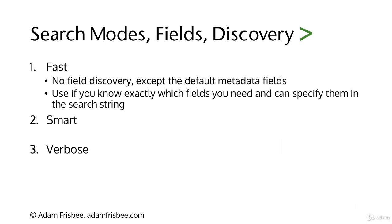In Fast Mode, no fields are discovered except the default three metadata fields that we talked about. Splunk assumes that you know which fields you want and you've specified them in the search string if you use Fast Mode. Obviously, Fast Mode is fast because you're doing the work of specifying the fields instead of Splunk's engine trying to figure out what the fields are.